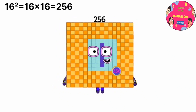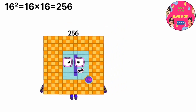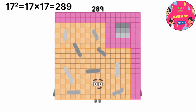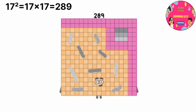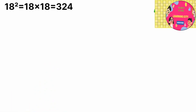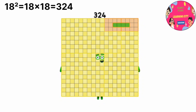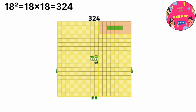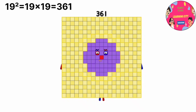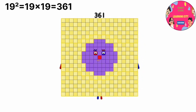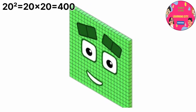16 power 2 equals 256, or 16 multiply by 16 equals 256. 17 power 2 equals 289, or 17 multiply by 17 equals 289. 18 power 2 equals 324, or 18 multiply by 18 equals 324. 19 power 2 equals 361, or 19 multiply by 19 equals 361.